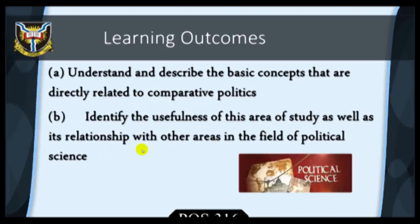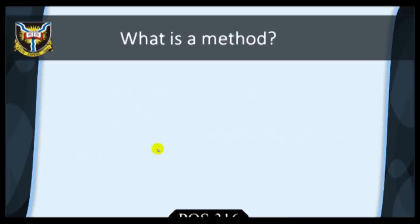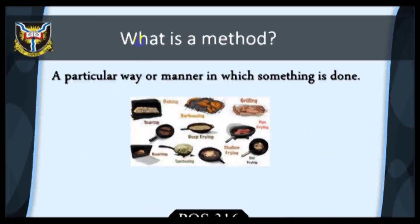For our own purpose, we will have six such subsections listed in A to F below. A. What is a method? For the purpose of this course, we may define a method as a particular way or manner in which something is done.